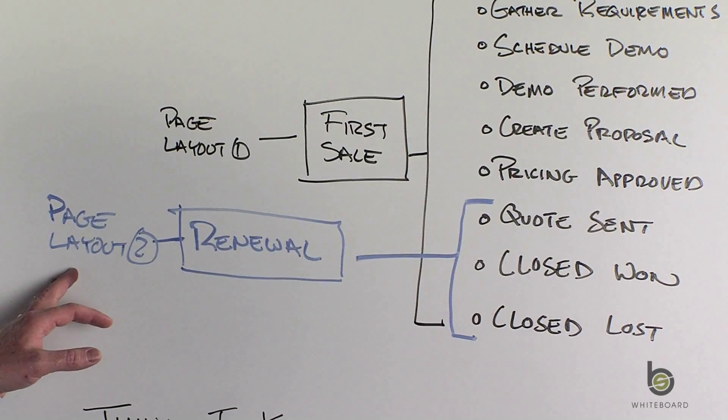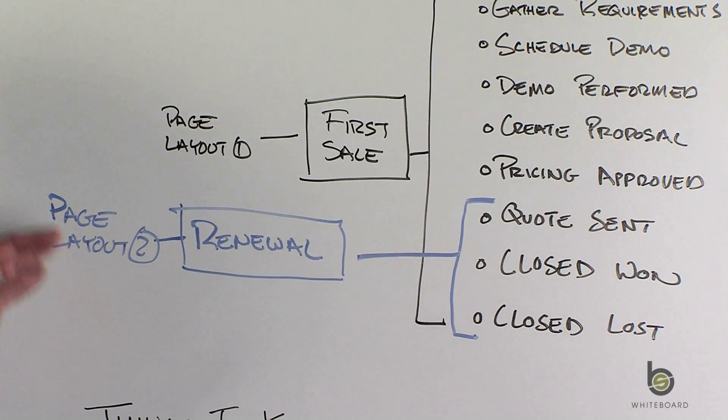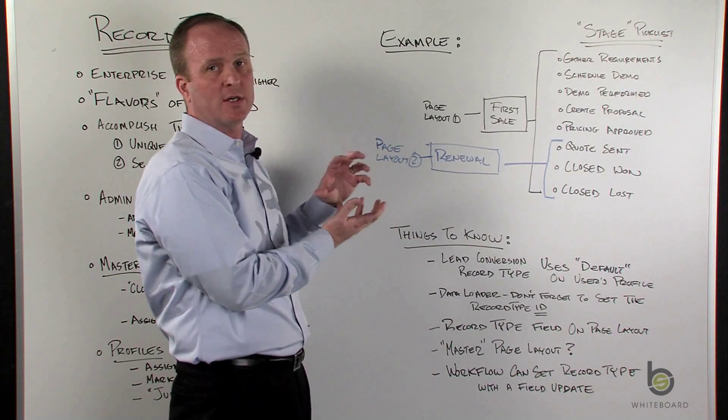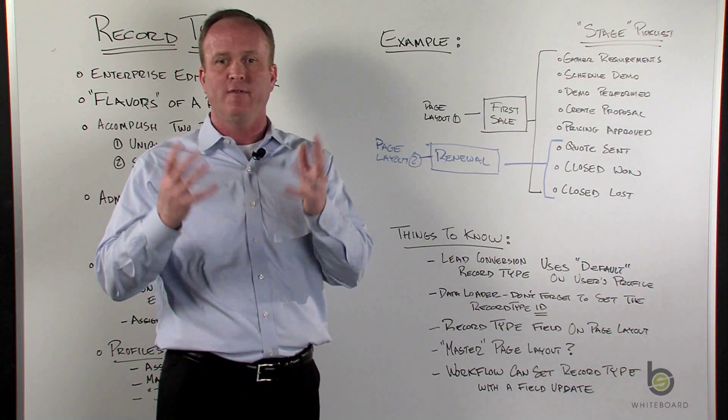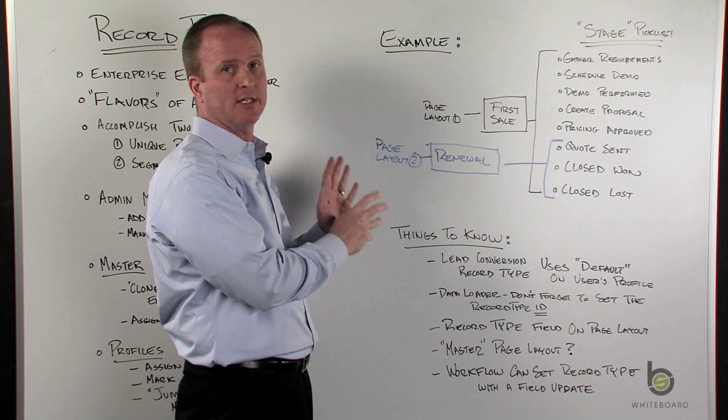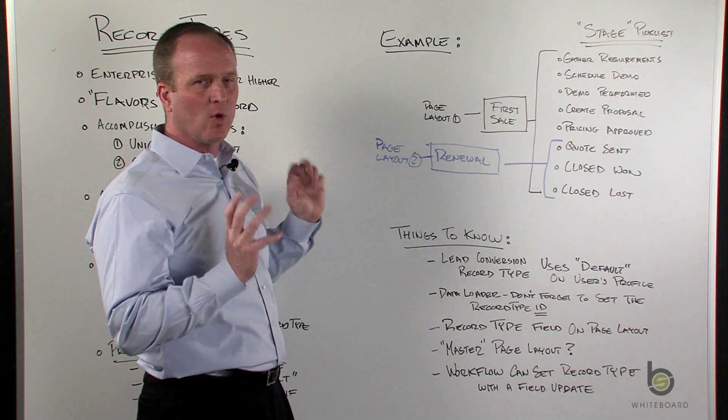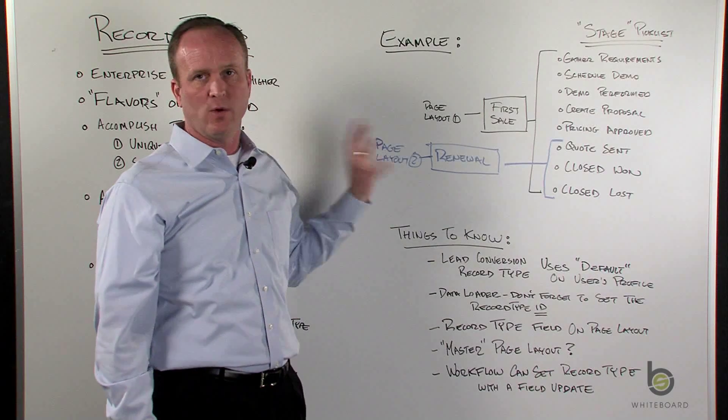But in my renewal, I'm just resending out my quote and pricing. And maybe I don't need all those extra fields. Again, I can tailor that experience with a record type so the user doesn't have to look at 40 fields when they only need to be concerned about eight for this particular process or record type. So hopefully that helped a little bit kind of get it more concrete on how record types work in a real life example.